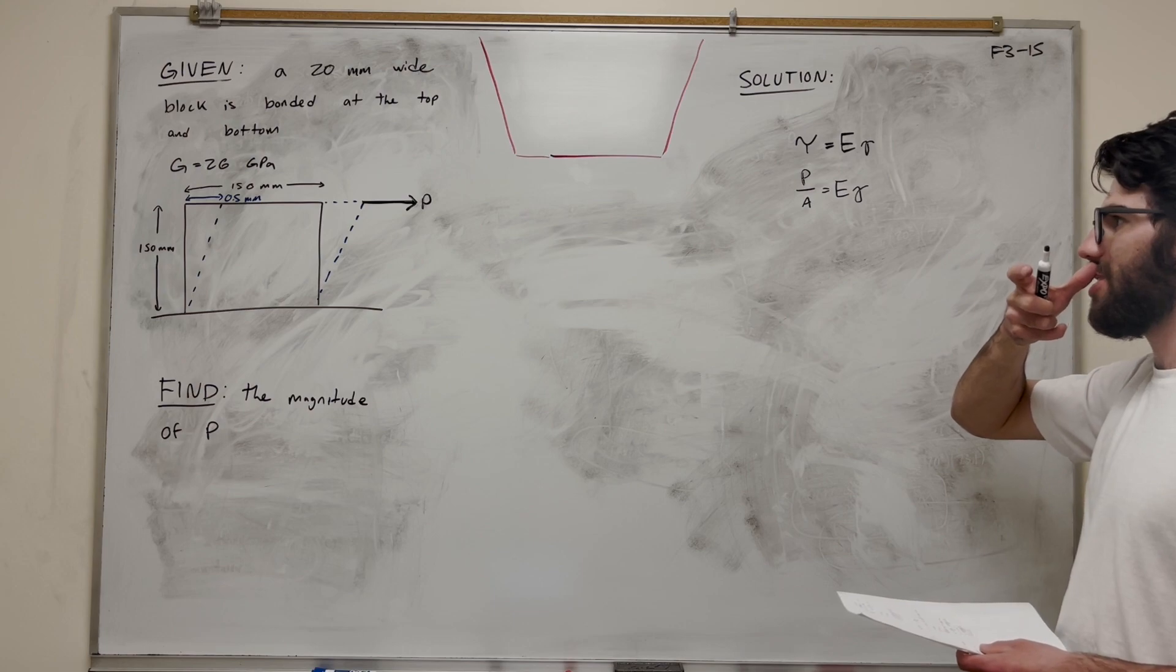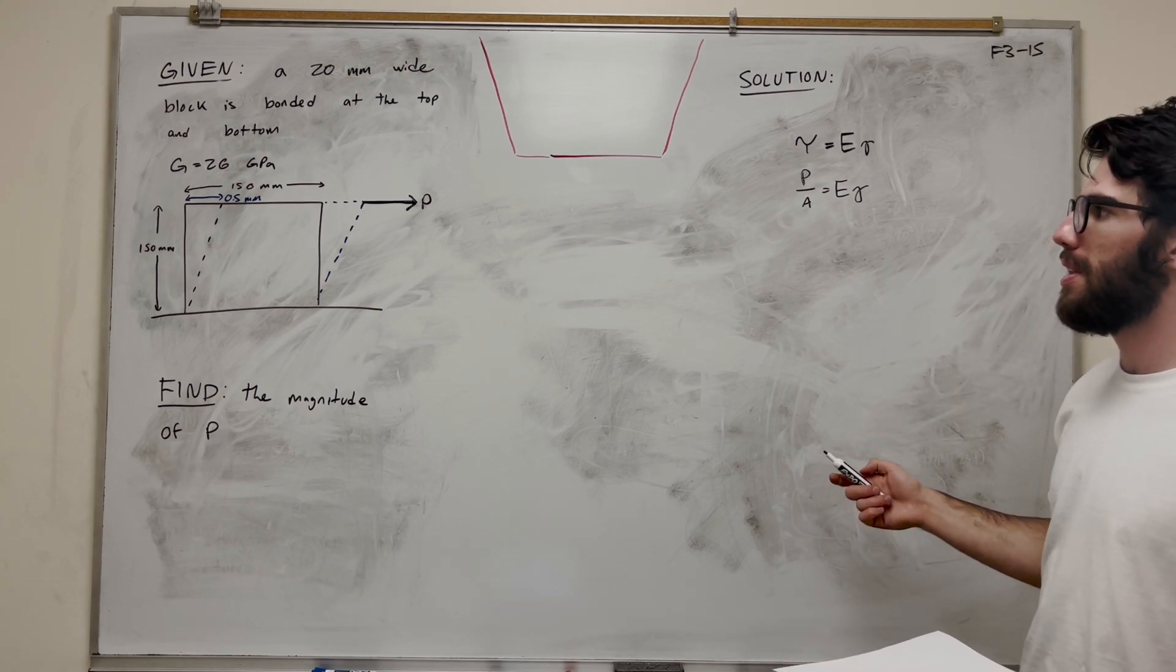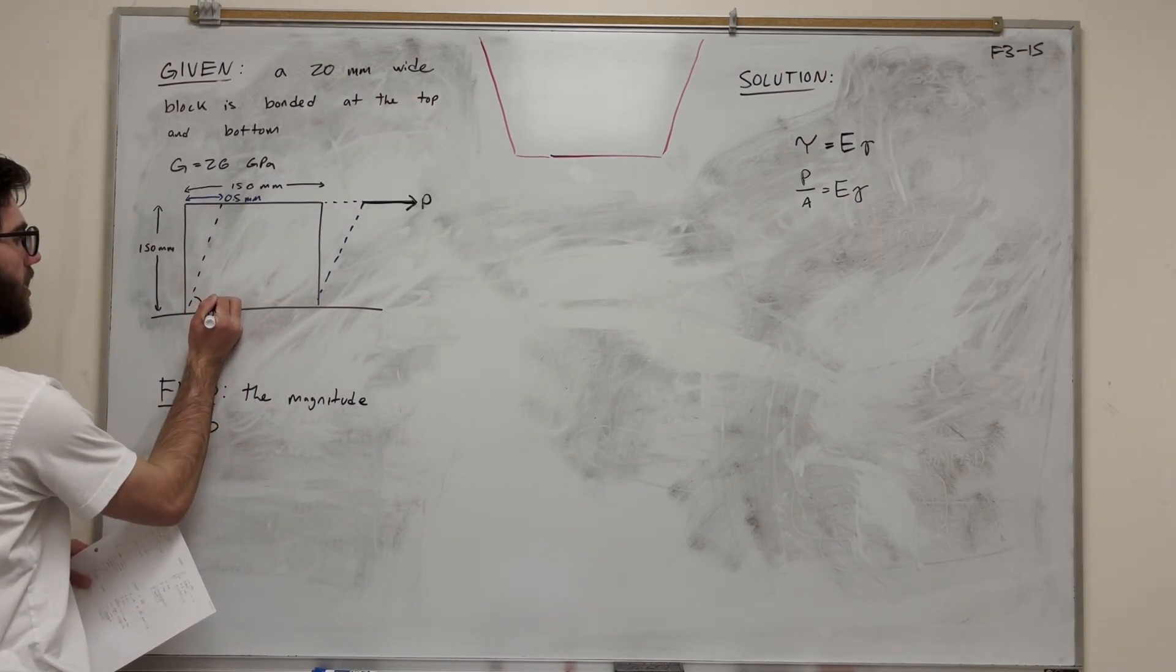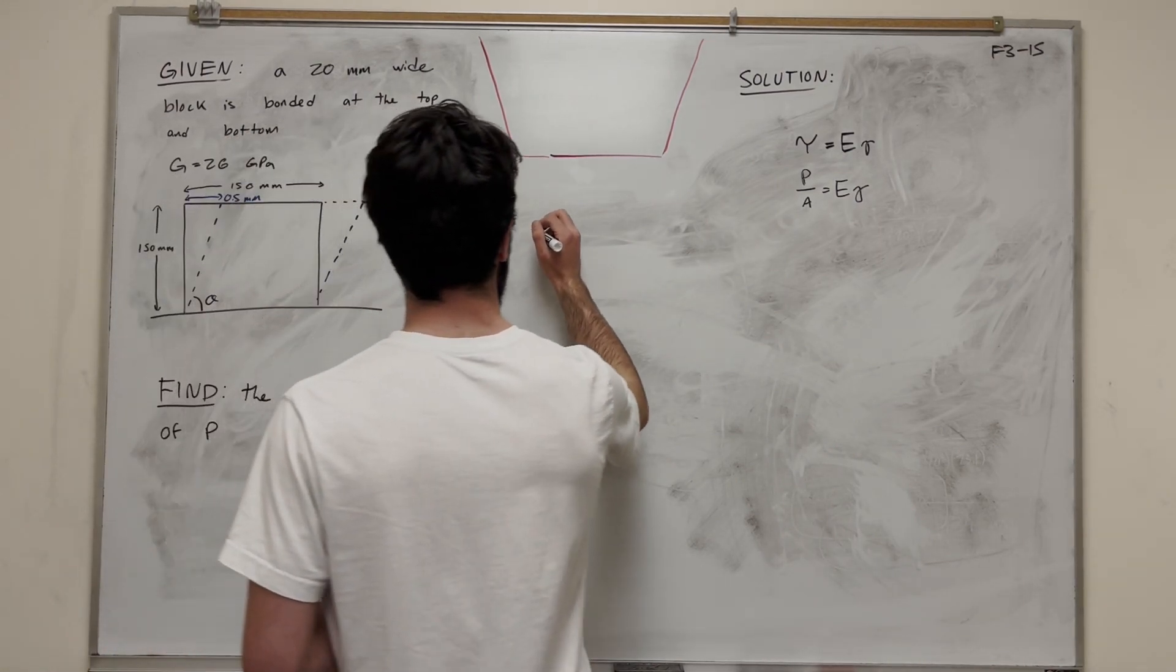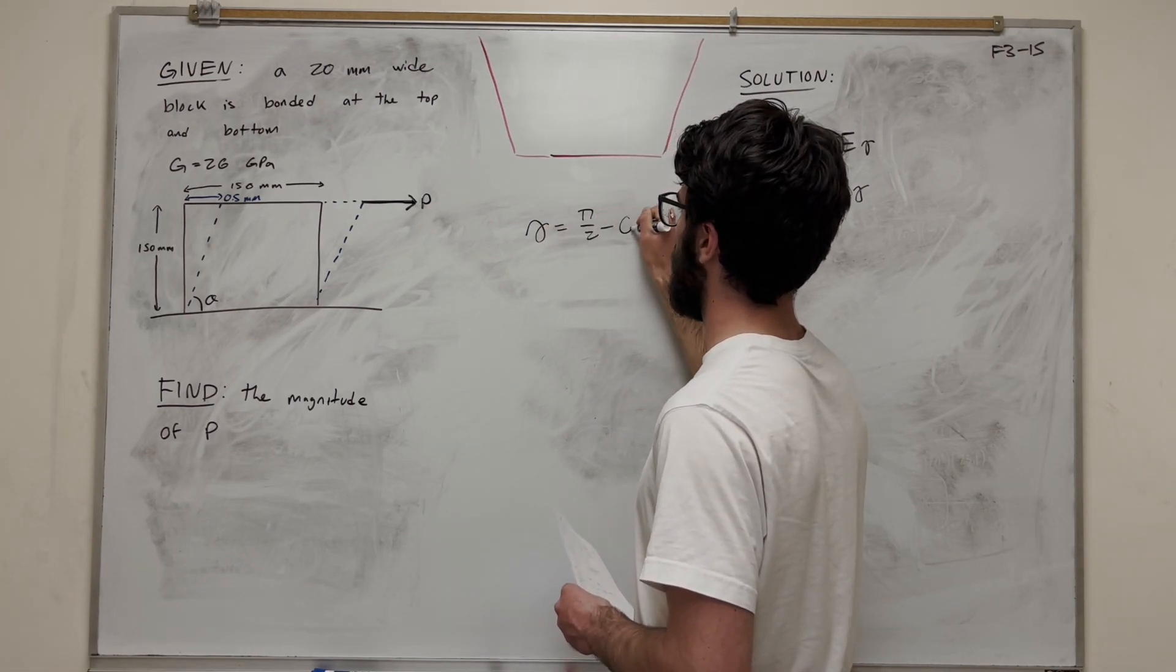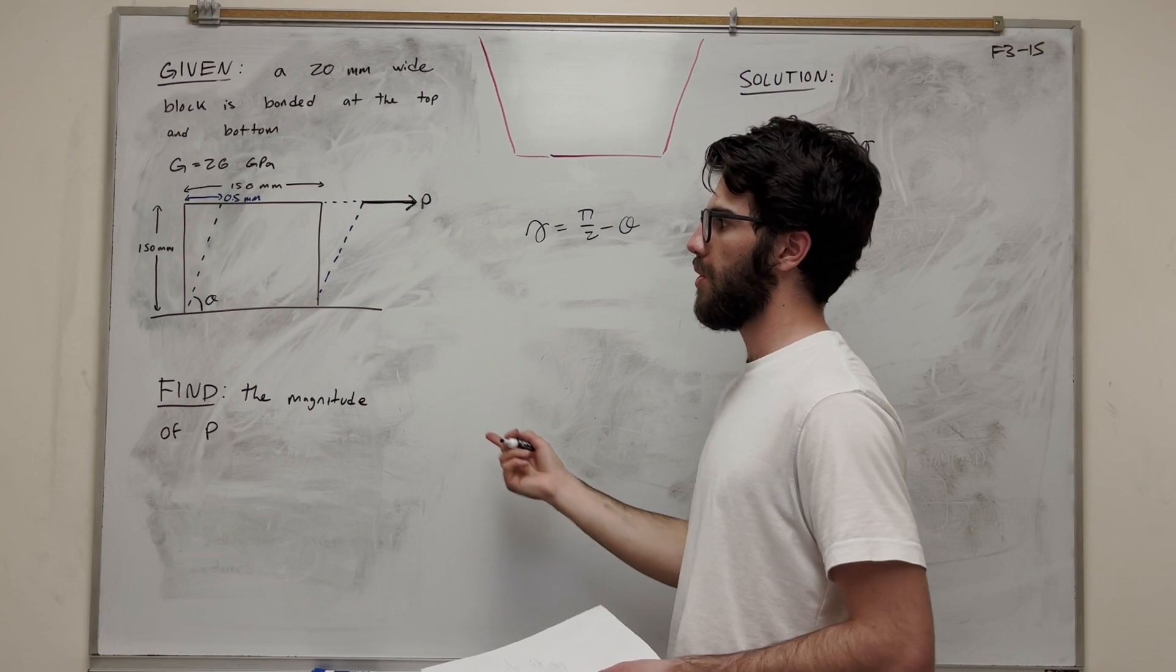We're going to find shear strain. This is kind of a chapter two problem, but we're going to draw a diagram. Shear strain - that's an equation. It's basically the change of that theta. The equation for shear strain is pi over two minus theta, and that theta is whatever that new angle is.